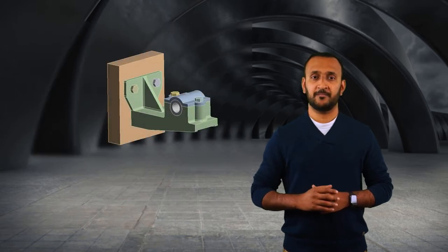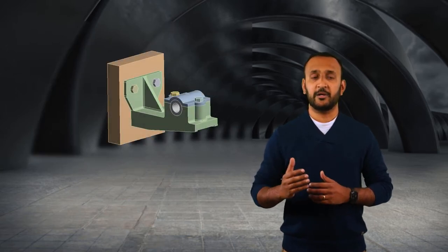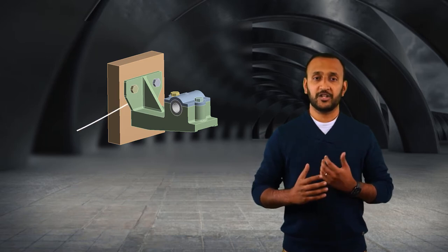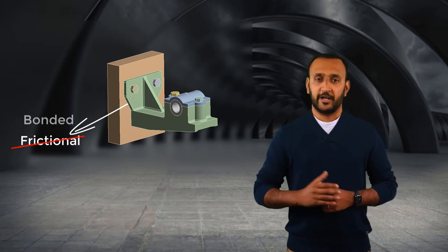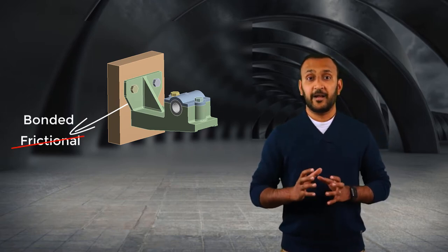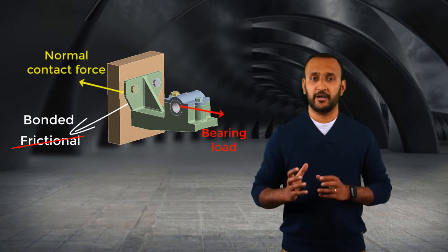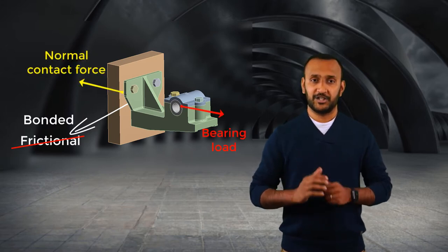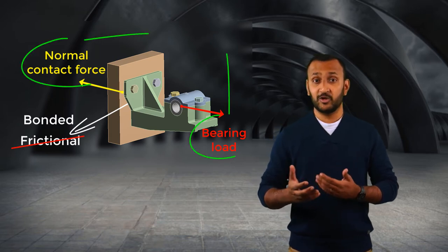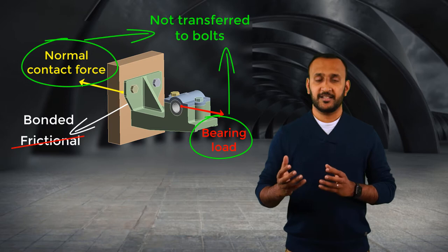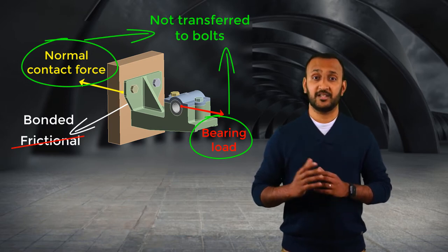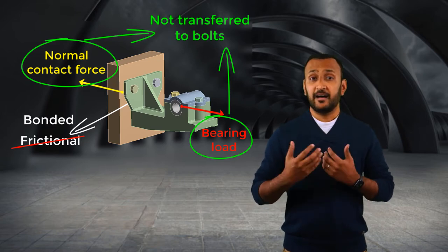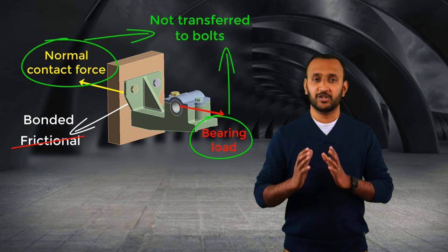For instance, let's revisit the bracket model from the last section. We discussed that the contact between the bracket and the wall is modeled using frictional contact. Say we replace it with a bonded contact. In that case, the applied bearing load is fully balanced by the normal contact forces due to the bonded condition. So these forces are never transferred to the bolts connecting the assembly to the wall. If we use this analysis to determine the stresses in those bolts, then our results are unreliable no matter how accurate the solver is.